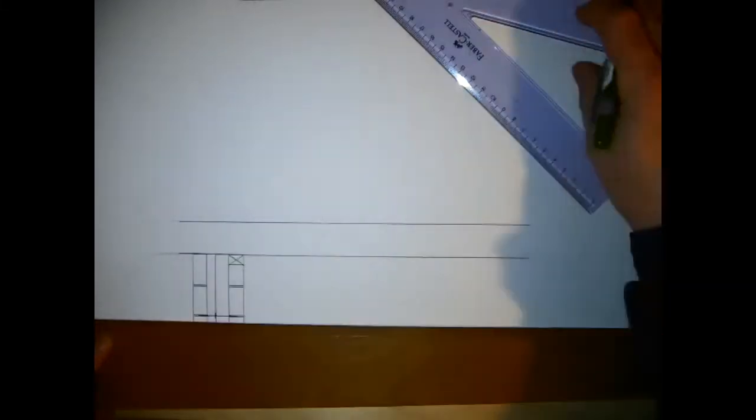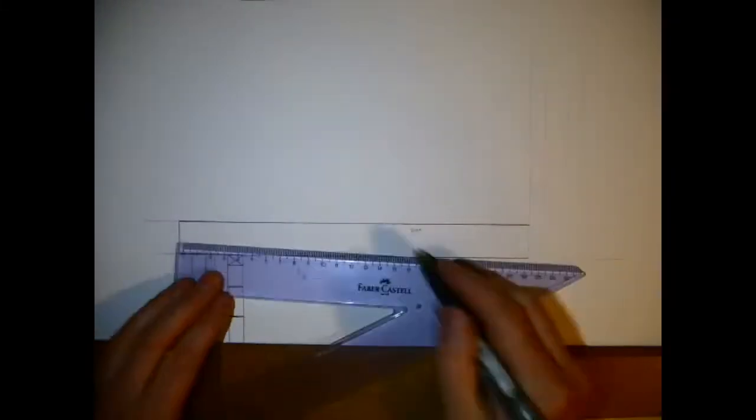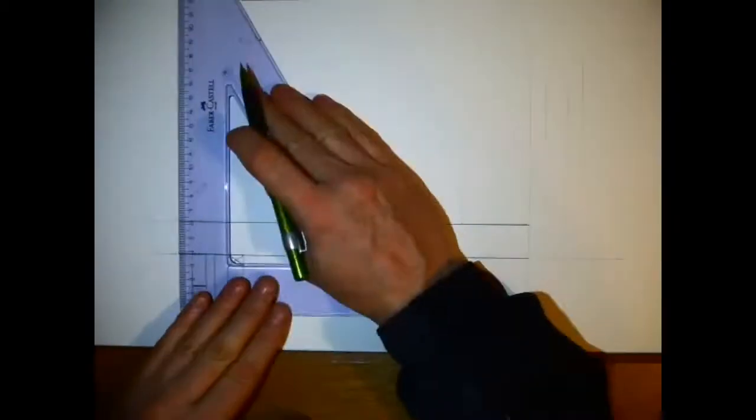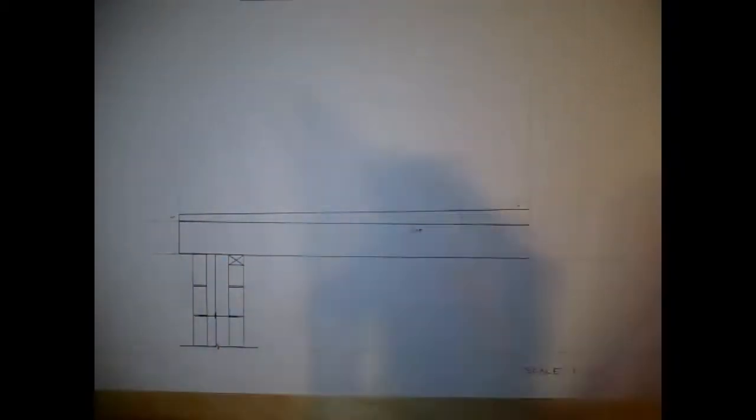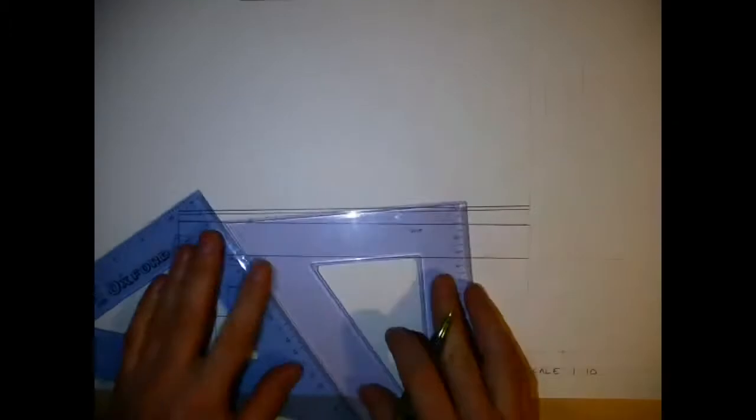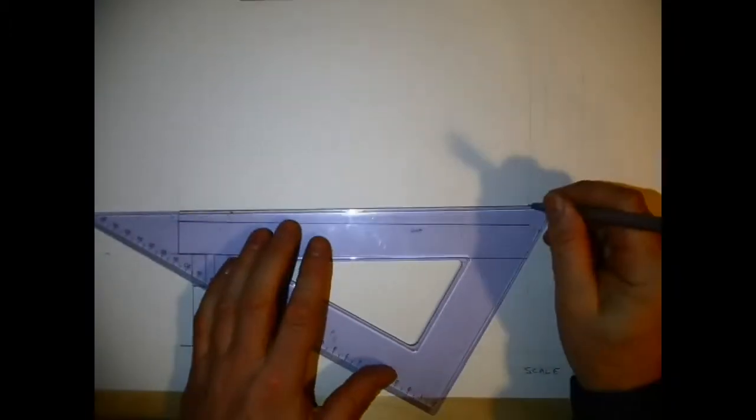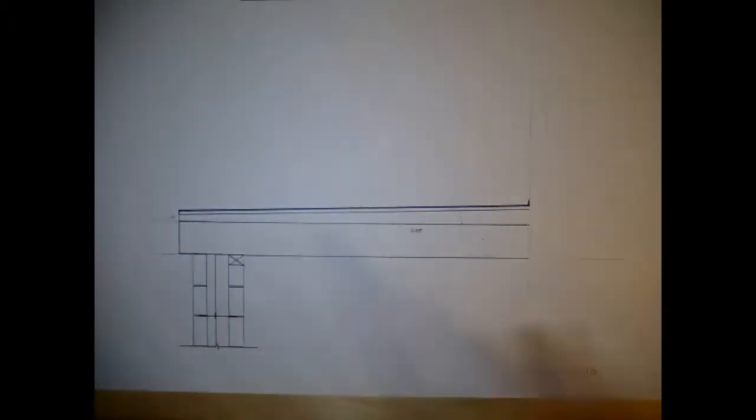I'll extend that 100mm past the exterior wall. That's the joist drawn out, 100 mil over the edge of the cavity wall. I'm measuring the 1:40 angle - measured over 200 and up 5 to give the 1:40 ratio.